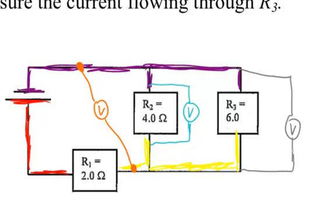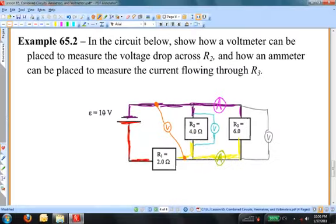For the ammeter, I have to connect it in series with R3. One way is to place the ammeter inside the leg between R2 and R3; another is to place it below. As long as R3 is the only element upstream or downstream from the ammeter's position in that branch, it will read the current through R3 but not through R2. There is a set of possible answers to that question — practice is what makes perfect on these.